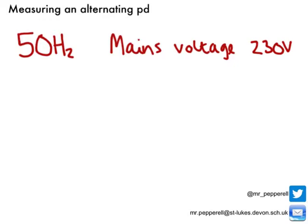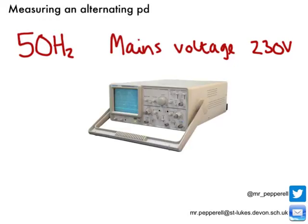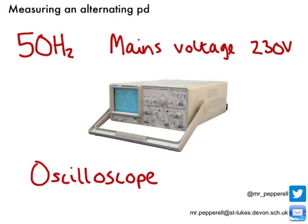We could actually use a piece of kit called an oscilloscope, which you may have seen in the lab, that's one there. An oscilloscope produces a trace that can be used to measure the peak potential difference and the frequency of an AC power supply.